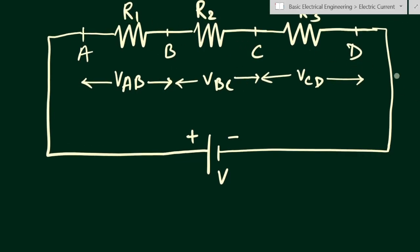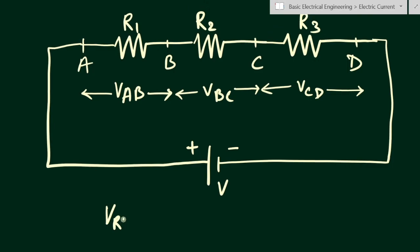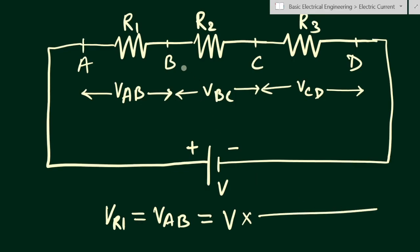What will be the voltage drop across resistance R1? Let us find out V_R1. V_R1 will be equal to V_ab, because I have marked points a and b here — so V_ab is the voltage drop across R1. We can multiply the total voltage (capital V, the source voltage) with the resistance for which we have to find the voltage drop.